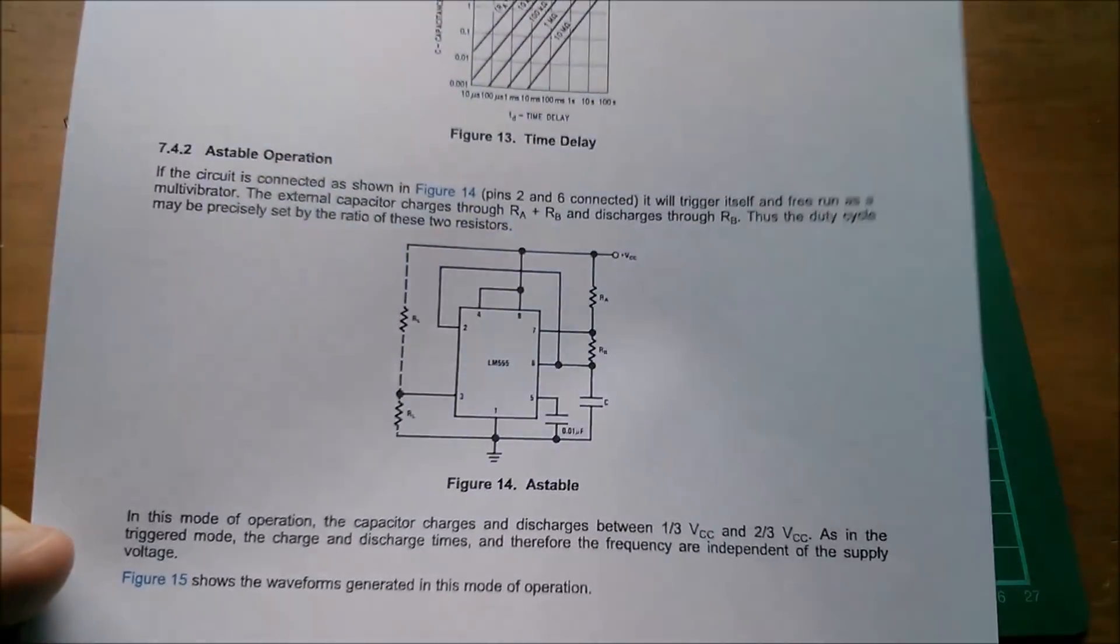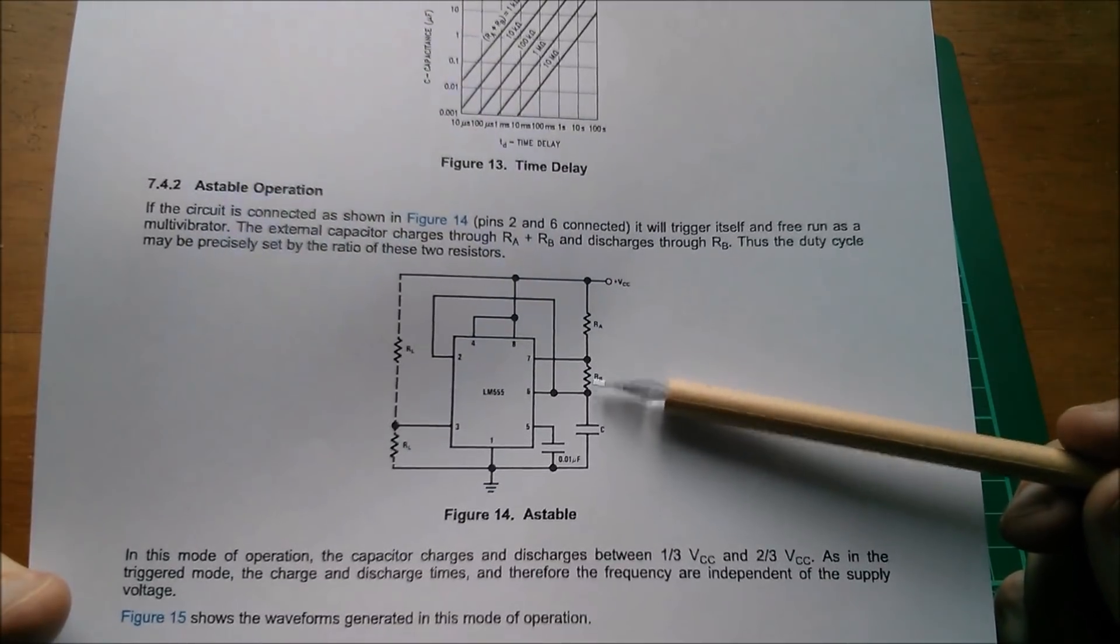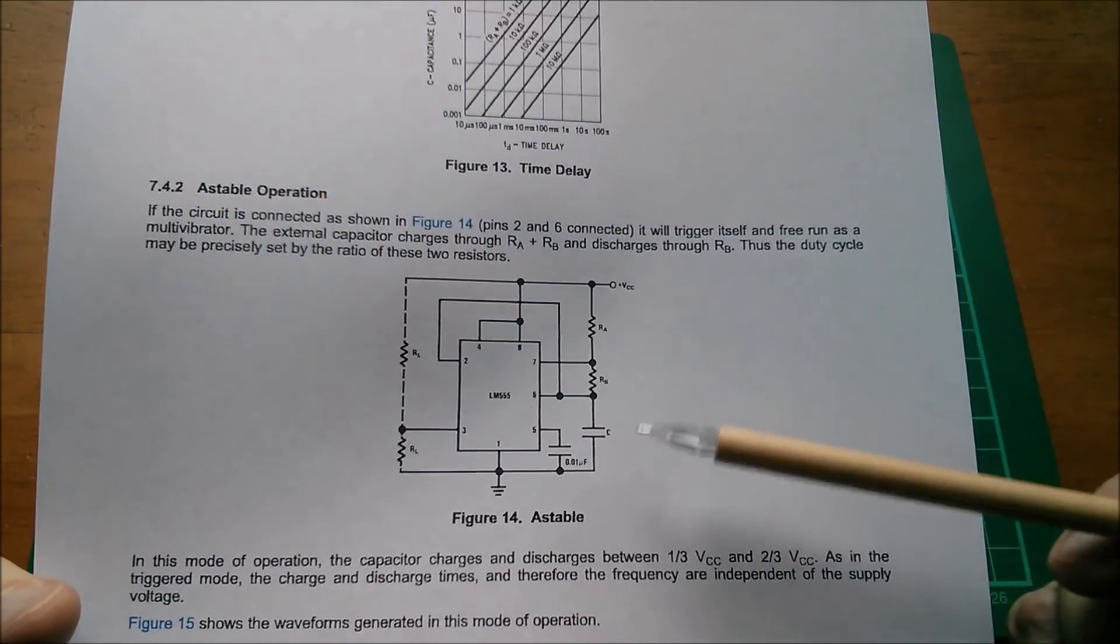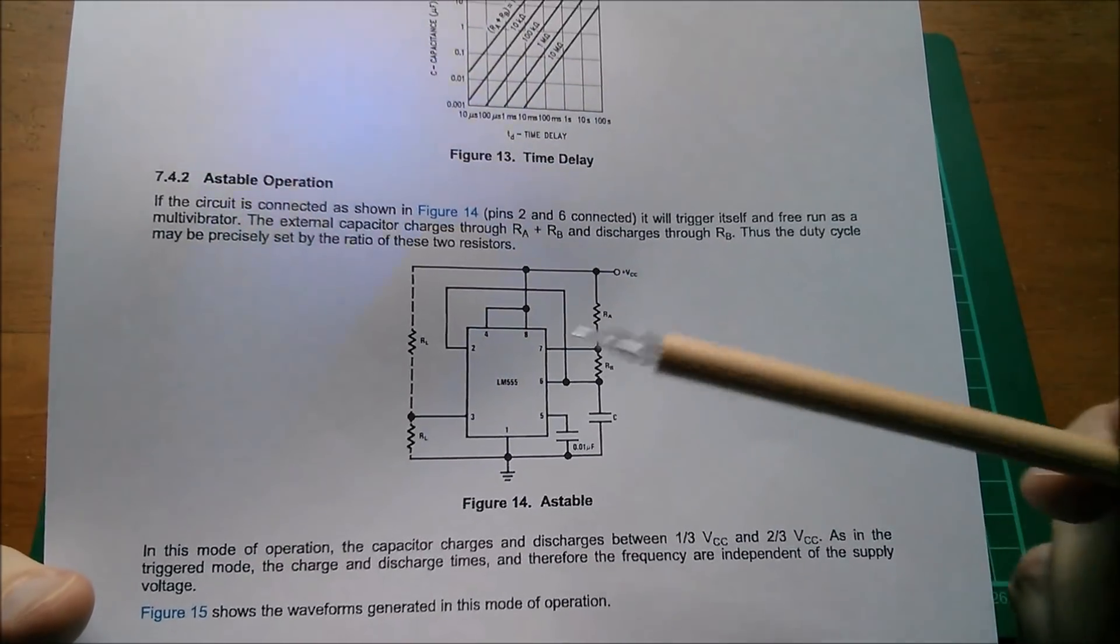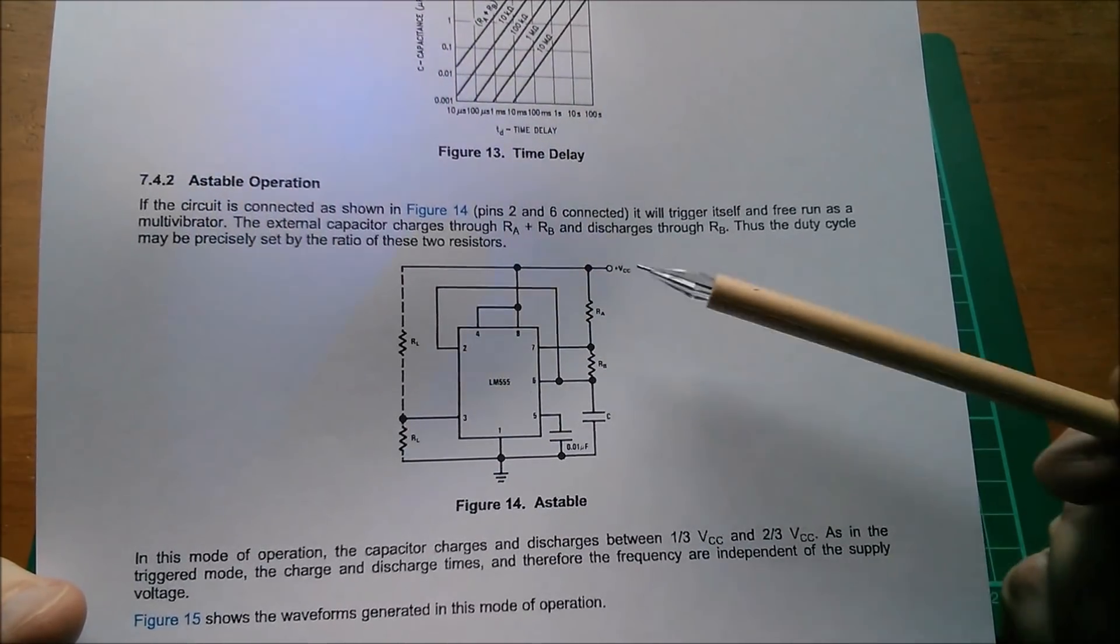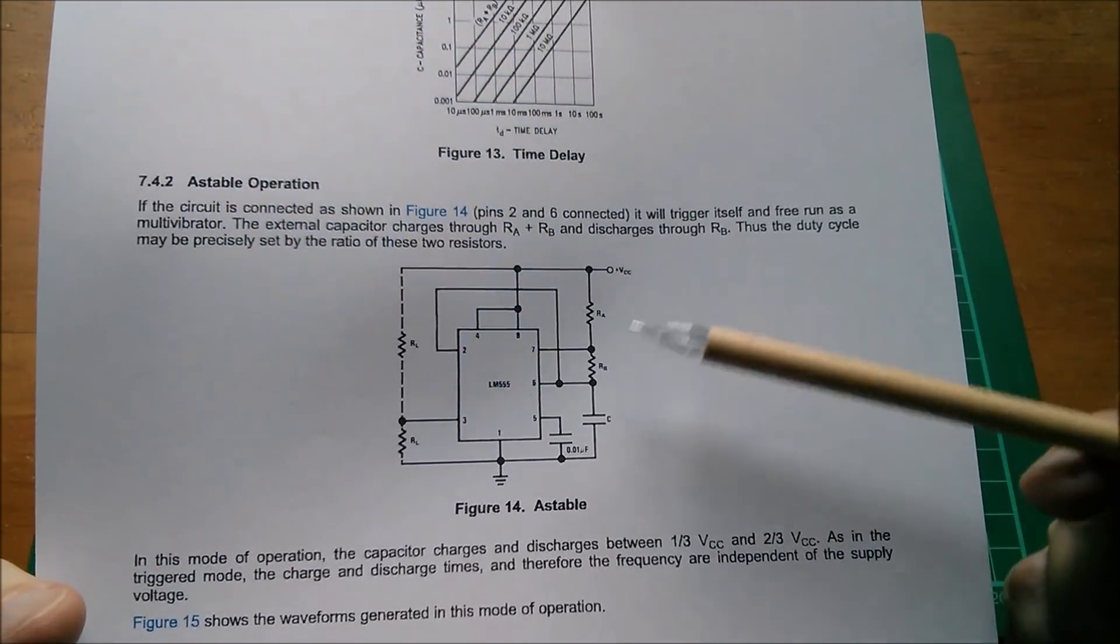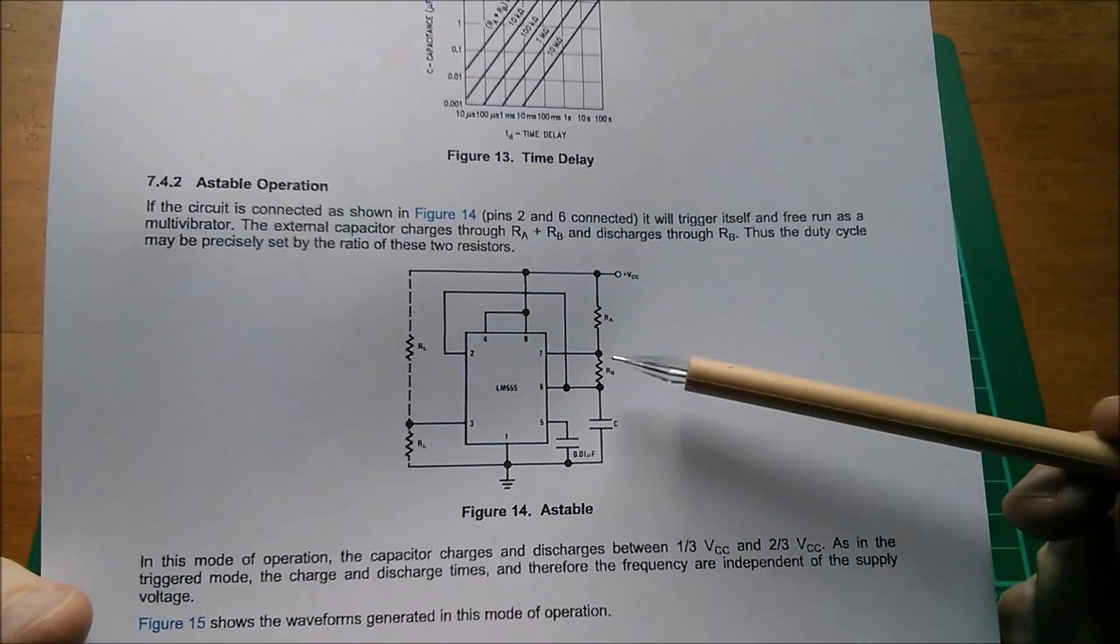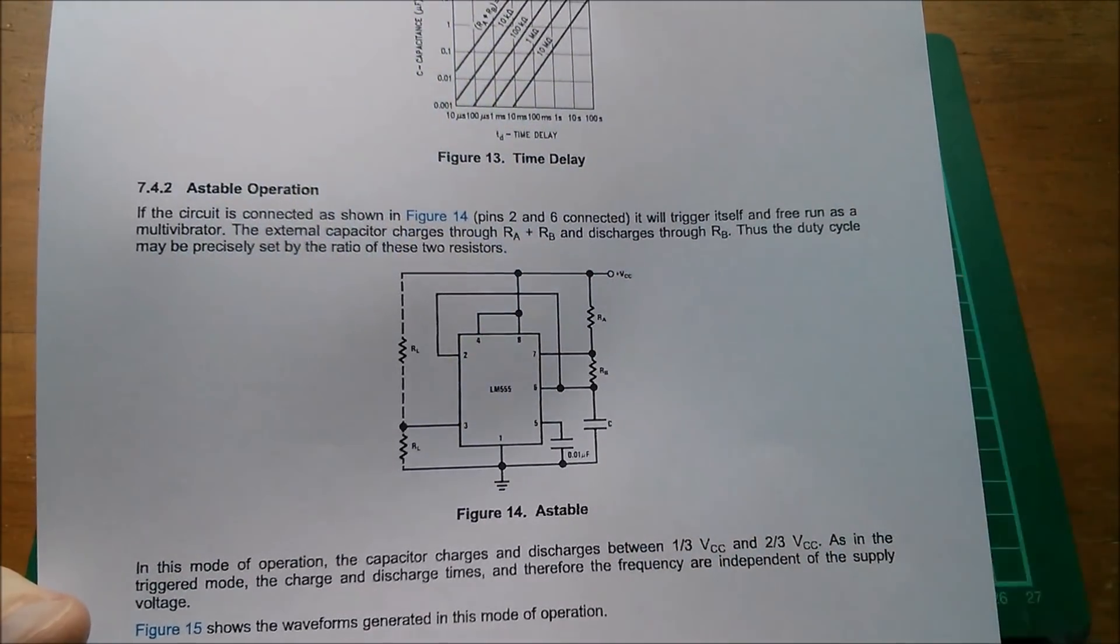So generally astable circuit is this, where you have the capacitor charges through these two resistors in series, VCC going to the top of the cap. But then when you hit two-thirds VCC and the comparator flips the RS latch, then pin 7 discharge pulls low. Well that does a strange thing. It puts this top resistor straight across VCC and ground effectively. And then it discharges the capacitor through just this one resistor. So it discharges through this one resistor but charges through the two resistors. So it discharges more quickly than it charges.